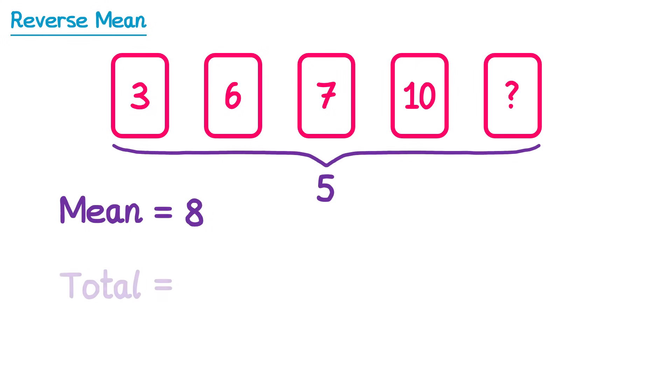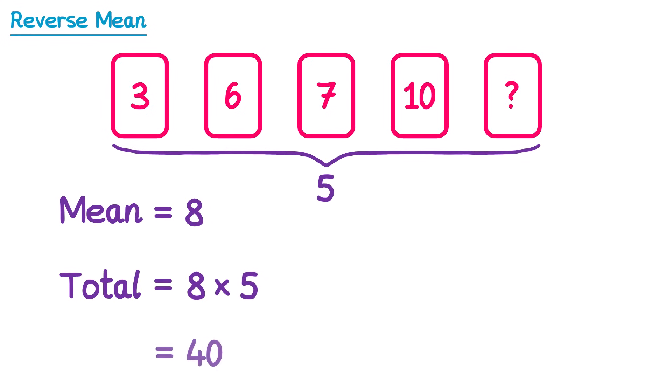We'll get back to the total of the numbers. So to work out the total, we multiply the mean, which is 8, by how many numbers there were, which is 5. And 8 times 5 is 40. This tells us that all of the numbers must add to make 40 if they're going to have a mean of 8.